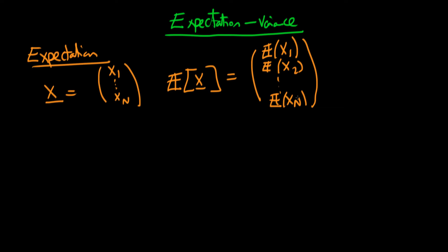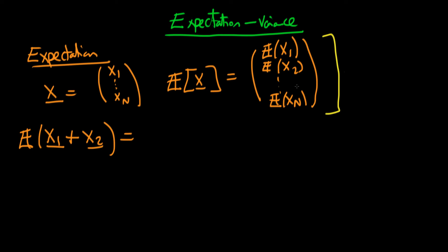So that's quite a simple generalization of the expectation from a scalar quantity to a vector quantity. Because of this simple generalization we can talk about some of the properties of the expectations operator when applied to a random vector. In particular, the expectation of the sum of two random vectors x1 plus x2 — because of the way we've defined the expectations operator — can be broken down into two steps.